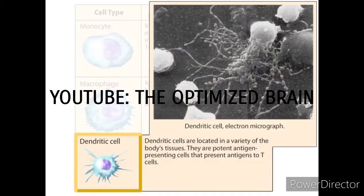Dendritic cells are located in a variety of the body's tissues. They are potent antigen-presenting cells that present antigens to T cells.